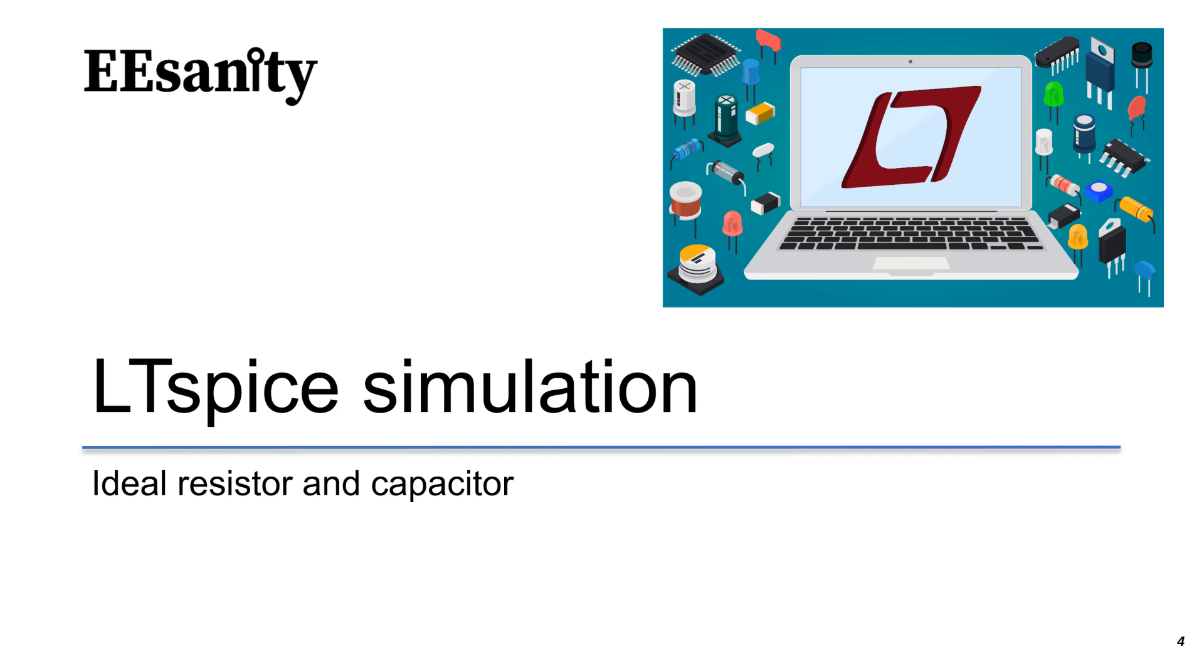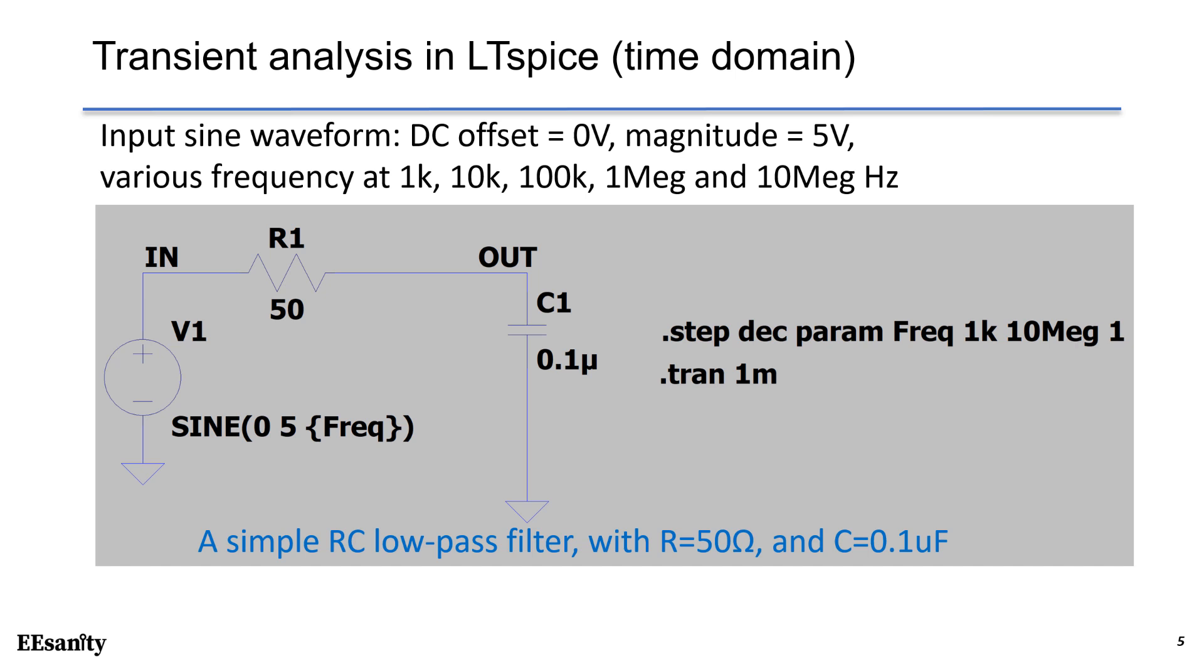First, let's run some transient analysis in LTspice simulation. In this case, we are using ideal resistor and capacitor to simplify the analysis. This is the setup in transient analysis in LTspice, which is in time domain. We have input voltage V1 as a sinusoidal waveform. We have 0V DC offset at V1, magnitude is 5V. That means the peak voltage on V1 is plus 5V and minus 5V. The peak to peak voltage is 10V. The frequency of sinusoidal waveform is changing from 1 kHz up to 10 MHz by a step function defined in the syntax.